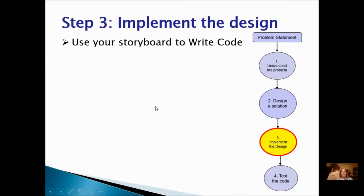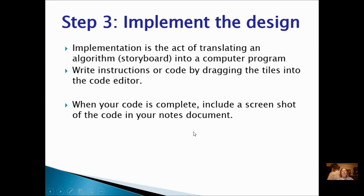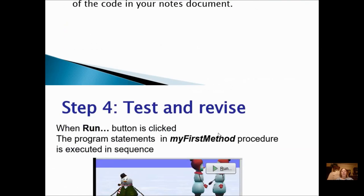Step 3 is to implement the design. You're going to use your storyboard to write the actual code. Remember to do incremental development — that means you're just going to write a few steps at a time and test while you go. Do not write the entire program at once. I also recommend that you put in some comments; every few lines that you're stopping to test might be a good time to add a comment. The implementation is the act of translating an algorithm or storyboard into a computer program. Write the instructions or code by dragging the tiles into the code editor. When your code is complete, include a screenshot of the code in your notes document.